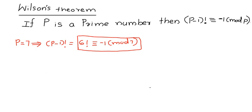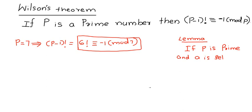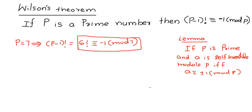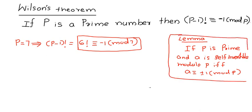Before proving Wilson's theorem, we first study a lemma. The lemma is: if p is prime and the integer a is self-invertible modulo p, if and only if a is congruent to plus or minus 1 modulo p. That means, for any prime p, there are only two self-invertible elements.